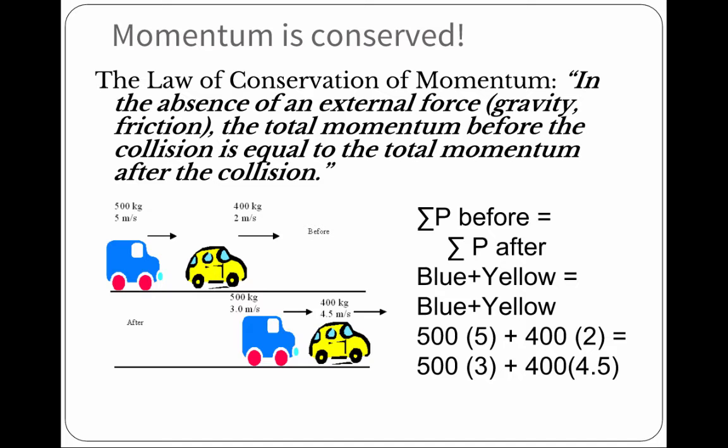So, the momentum of the blue car before is 500 times 5. The momentum of the yellow car before is 400 times 2. The blue car is going to hit the yellow car because he's going too slow. After they collide, the blue car still has a mass of 500, but it slows down to 3 meters per second. The yellow car still has a mass of 400, but it's going to speed up to 4.5 meters per second. And yes, if you actually did the calculations, it would be the same.